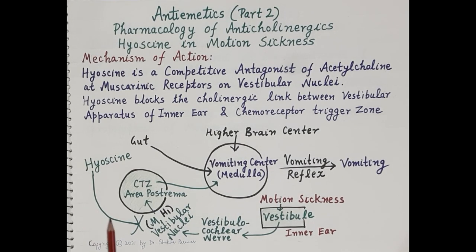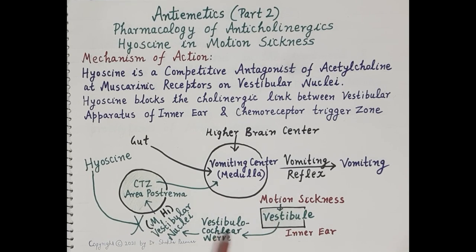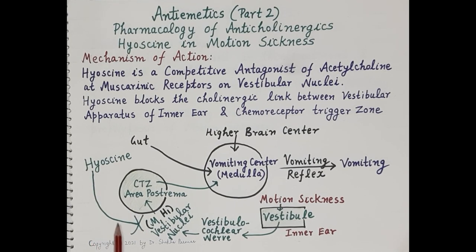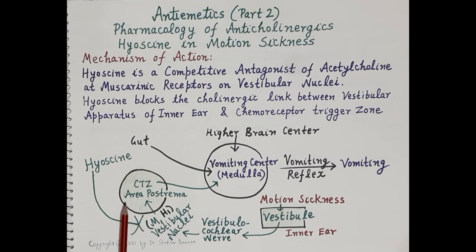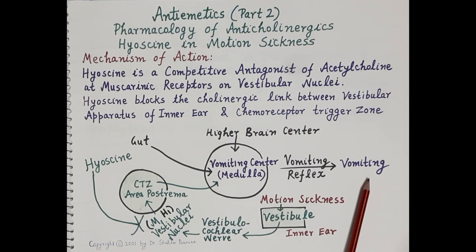As shown in the diagram, hyoscine binds to the muscarinic receptors located on the vestibular nuclei. It blocks these muscarinic or cholinergic receptors, which blocks the cholinergic link between the vestibular apparatus (inner ear) and the chemoreceptor trigger zone. This prevents stimulation of the chemoreceptor trigger zone and further prevents stimulation of the vomiting center, thereby preventing the vomiting reflex. Therefore, hyoscine is used in the treatment and prevention of motion sickness.